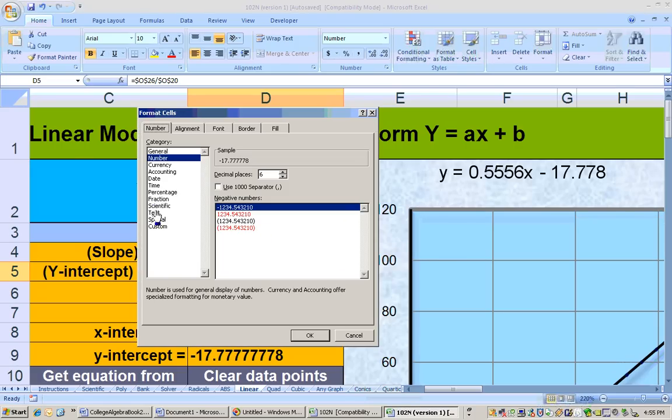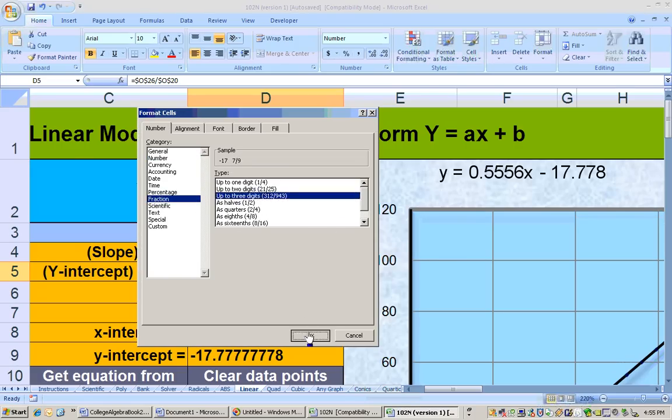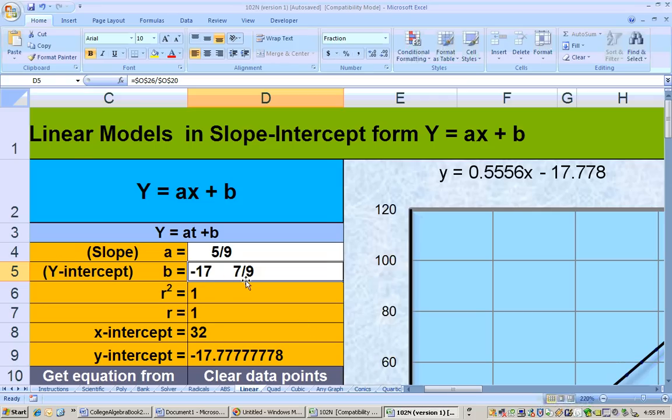and that fraction right there if you wanted to see it as a fraction is, let's go to fraction, and that fraction is actually negative 17 and 7 ninths if we really wanted it like that. So that's that example right there.